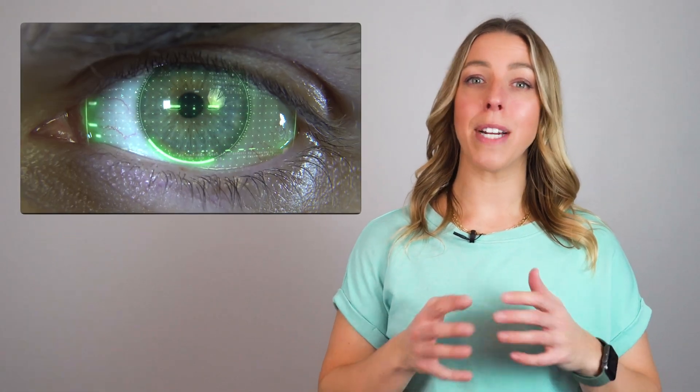There are several types of colorblindness, and they are generally categorized into three main types. First, deuteranomaly. This is the most common type of colorblindness, where the green photoreceptor is affected. People with deuteranomaly have difficulty distinguishing between red and green hues.